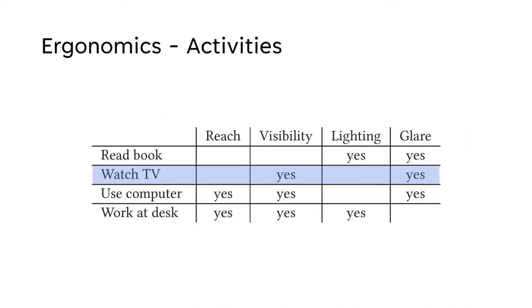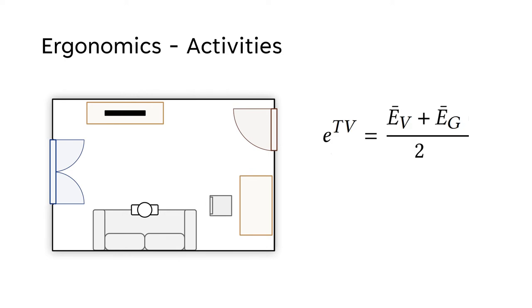To evaluate a layout, the paper introduces a set of activities to model a typical user's behavior. When watching TV, the ergonomic score is based on the rules visibility and glare.